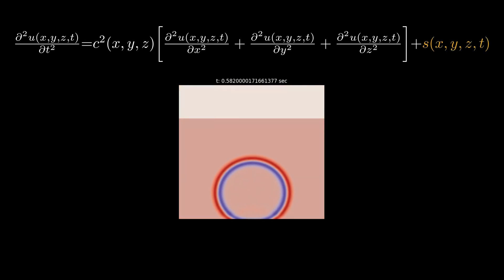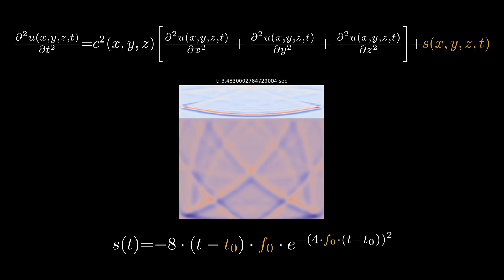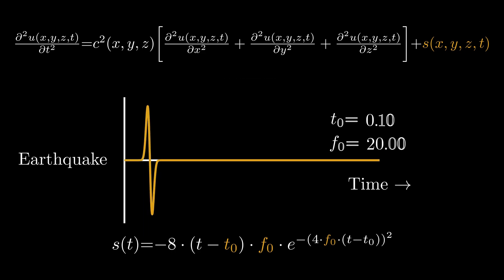Everything starts with a source. It releases the energy which then propagates through the medium. For this simulation, I went with a relatively simple definition of the source function. Using two variables T0 and F0, I can control the time and the nature of the energy released. Increasing T0 delays the earthquake event and decreasing F0 makes the energy release over a longer duration.